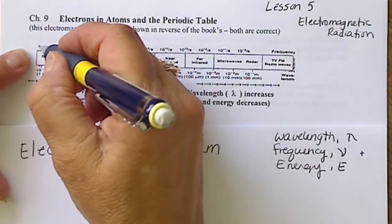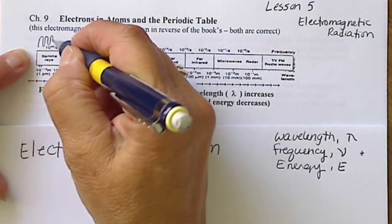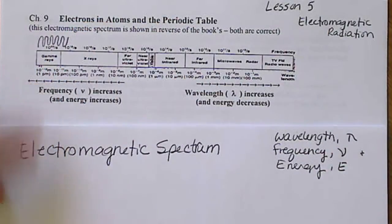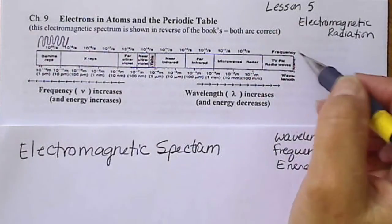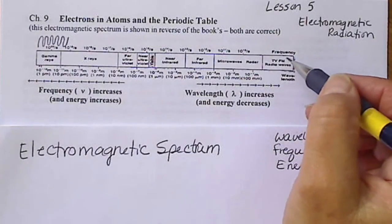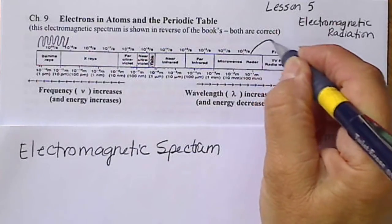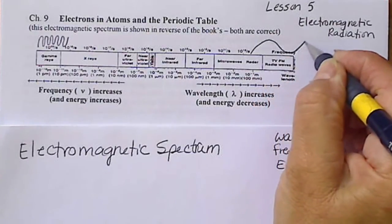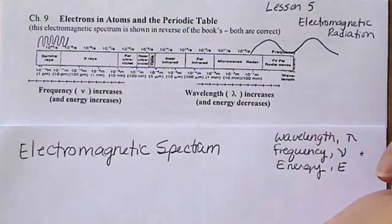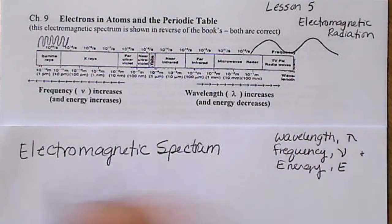If I were to draw the wavelength for gamma rays, the waves would be very close together. That's a small wavelength or a short wavelength. If I were to draw the waves representing radio waves, for example, the wavelength here would be very long. And so we can see wavelengths.